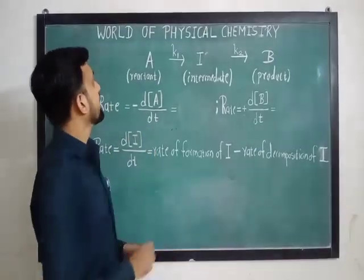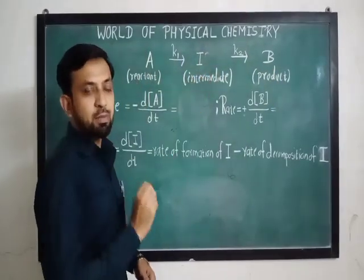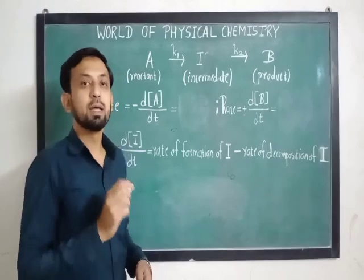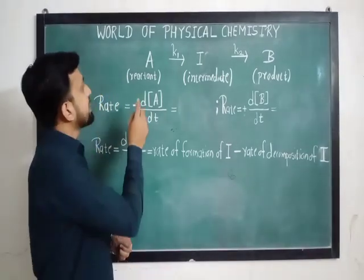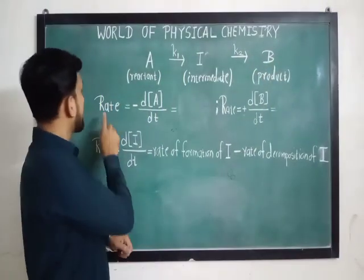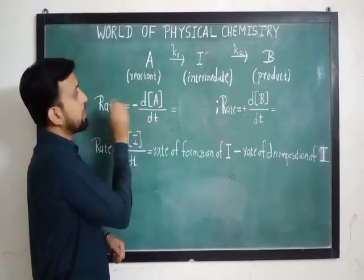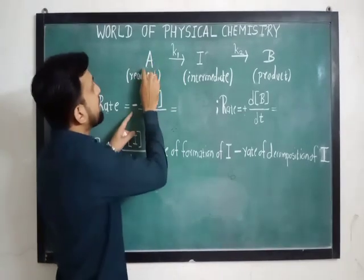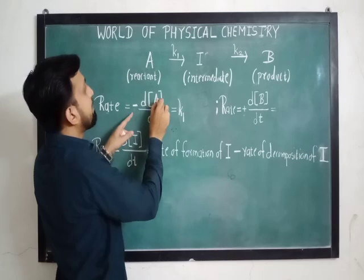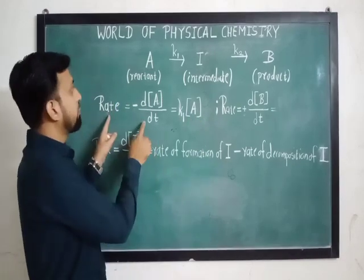Here the reaction is written as: reactant A gives product B through intermediate I. This is an example of a complex reaction — specifically a consecutive or sequential reaction. For such a reaction we can easily set up the rate law for the reactant as well as the product. The rate equals d[A]/dt, and since A is disappearing we put a negative sign: minus K1 times the concentration of A. This is the rate law for the reactant.